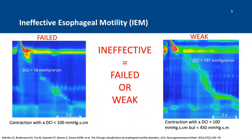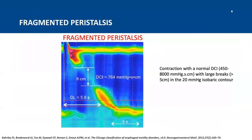Fast-tracking to the Chicago classification in 2015, the latest Chicago classification for high-resolution manometry, the term ineffective swallow was defined as either failed or weak. A failed swallow was defined by a DCI less than 100, and a weak swallow was defined by a DCI between 100 and 450. Fragmented peristalsis was defined by a contraction that had a normal DCI but a large break in the 20-millimeter mercury isobaric contour — a normal swallow with a large break.